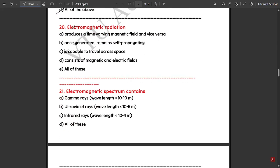Successful spatial analysis needs all of the above: appropriate software, appropriate hardware, and competent user. Electromagnetic radiation—all of the above. It produces a time-varying magnetic field and vice versa, once generated remains self-propagating, is capable to travel across space, and consists of magnetic and electric fields.